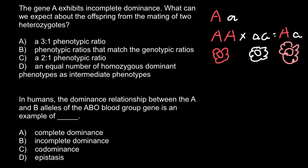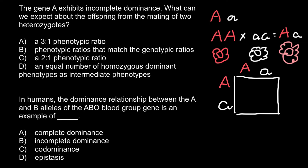So if we have to cross two heterozygous parents whose genotype is Aa × Aa, and we build a Punnett square, we can predict the outcome of such a cross.